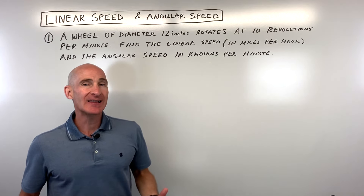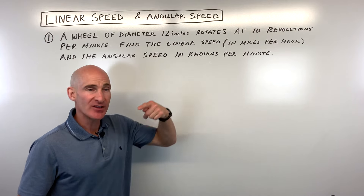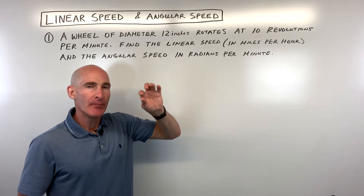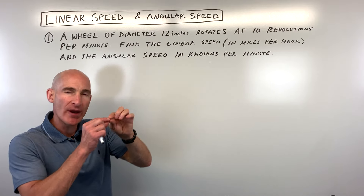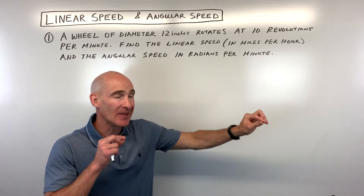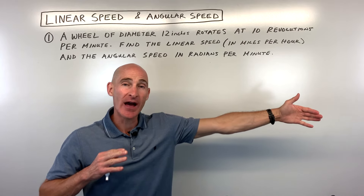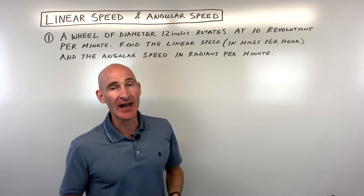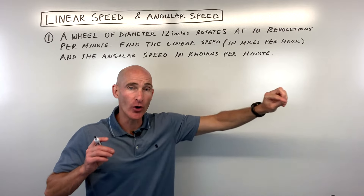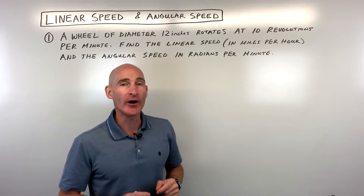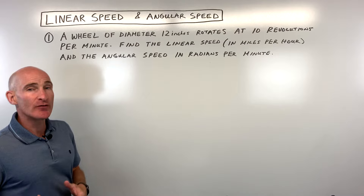What exactly is linear speed? We have this wheel that's turning, and if you imagine a point on that wheel — if it were to travel not in a circle but in a straight line — what would be the distance it travels per unit time? In this case, we're figuring out how many miles it would go in one hour. We can think about this as a unit conversion problem.